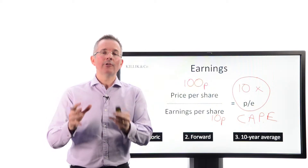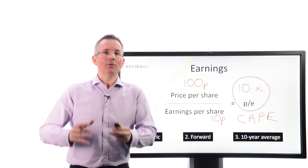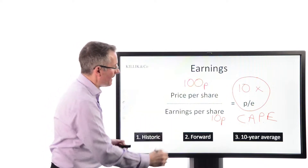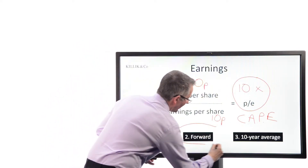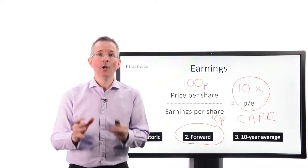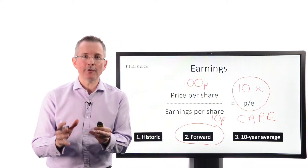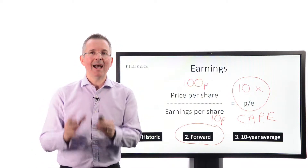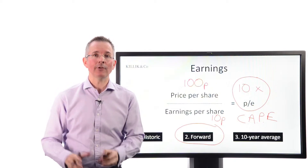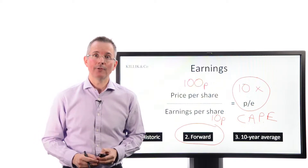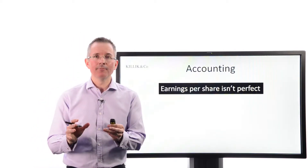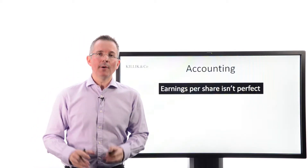You can argue the toss — I'm not going to do it too much here. You could write a degree course on the merits of the three different measures. This one is very common but you will come across the other two. So my first point is: when you look at a PE ratio, at least establish how it's been calculated before you rely too heavily on it. Problem number two: accounting.